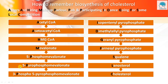The second P stands for 5-Pyrophospho Mevalonate, another P stands for 3-Phospho-5-Pyrophospho Mevalonate, I stands for Isopentenyl Pyrophosphate, and D stands for Dimethylallyl Pyrophosphate. G stands for Geranyl Pyrophosphate.